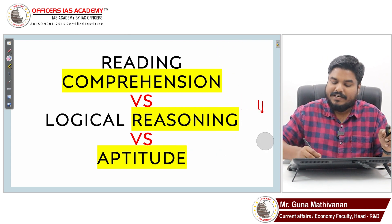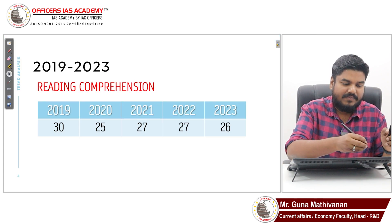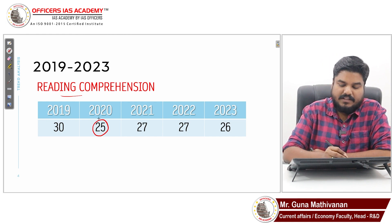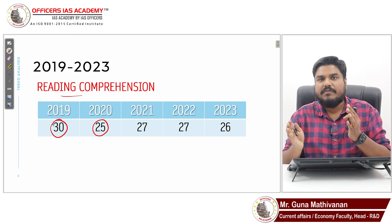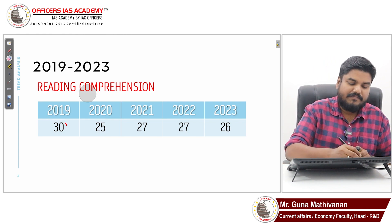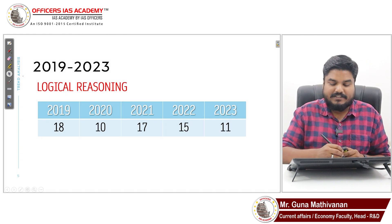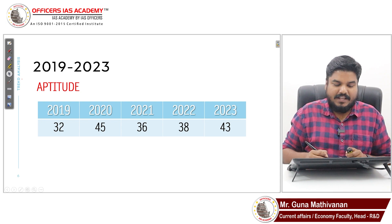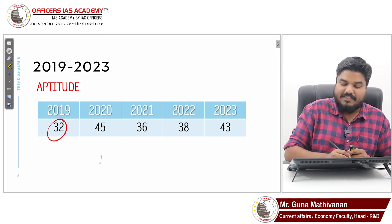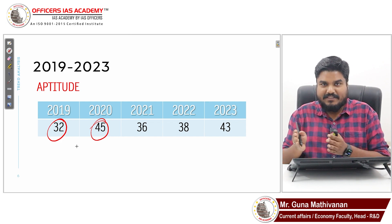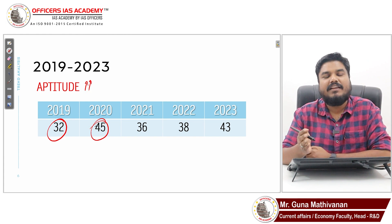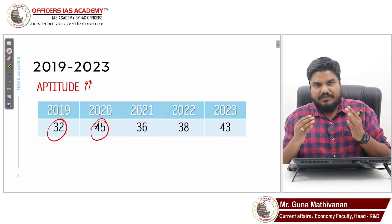In more detail: reading comprehension ranges between 25 and 30 questions in the last five years. Logical reasoning ranges between 11 and 18. For aptitude, the least is 32 and the highest is 45 — so aptitude carries the highest weightage. In my personal experience, a lot of students find aptitude difficult to manage.